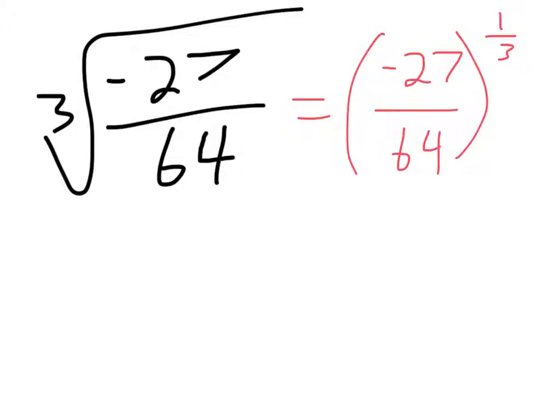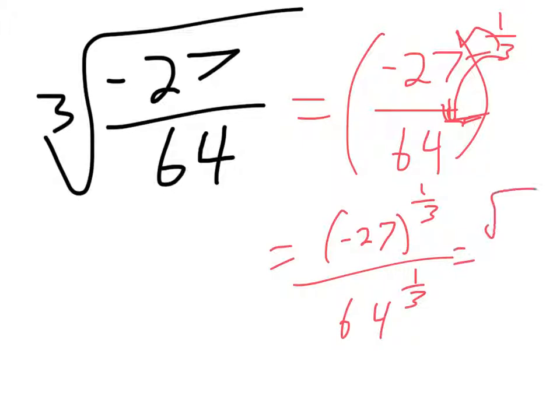And when you have a power on top of one term, that power can come on top of and multiply to each power on the inside. These are powers of one, so that's just going to be negative 27 to the one-third over 64 to the one-third, which again is the cube root of negative 27 over the cube root of 64.